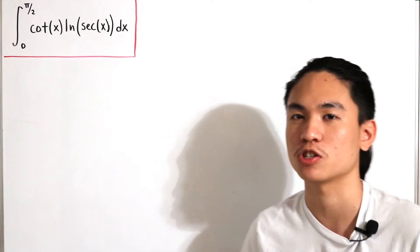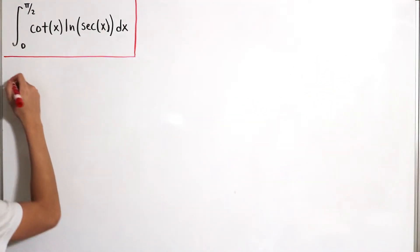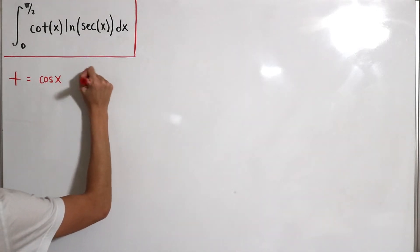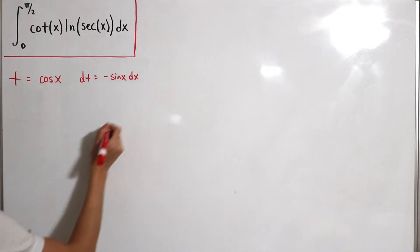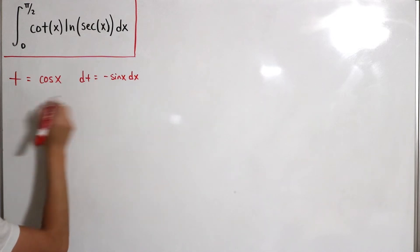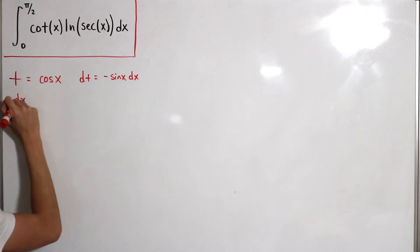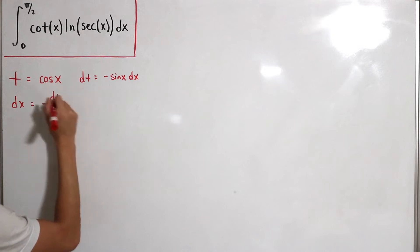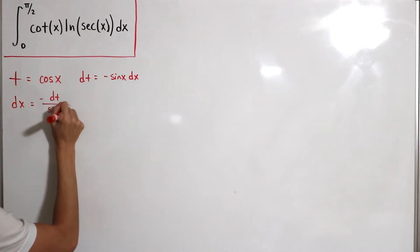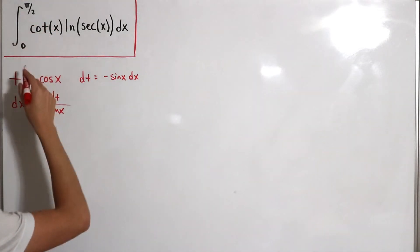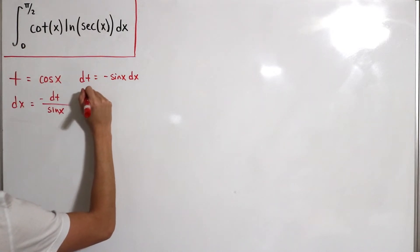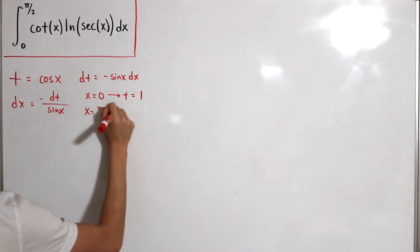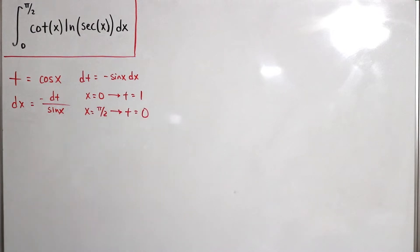Let's do a change of variables. We'll set t equal to cosine(x). Then dt equals negative sine(x) dx, and solving for dx gives dx = dt / (−sin(x)). Computing the new bounds: when x = 0, t = 1; and when x = π/2, t = 0.